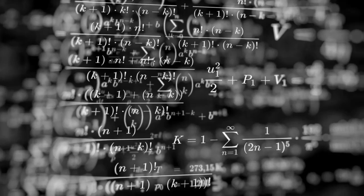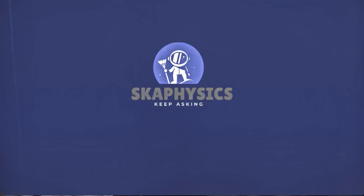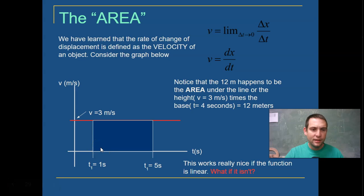Now let's integrate. The area. We've learned the rate of change of displacement is defined as the velocity of an object. Consider the graph below.